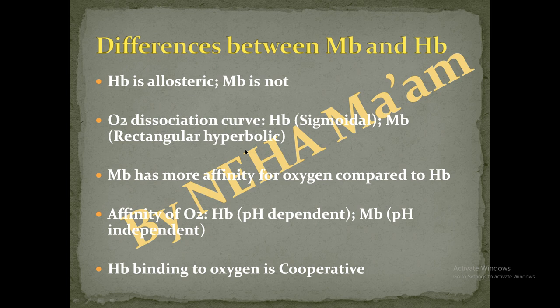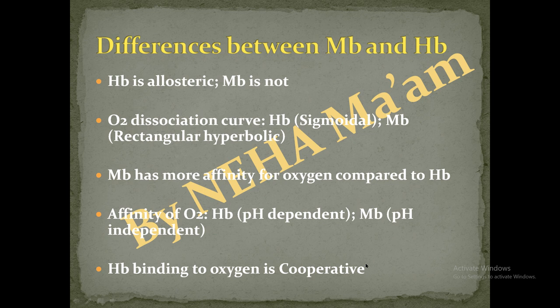Myoglobin binds oxygen with more affinity than hemoglobin. The binding affinity of hemoglobin to oxygen is pH-dependent, while myoglobin is pH-independent — meaning there is no pH requirement for oxygen to bind to myoglobin. Hemoglobin binding is cooperative: when one oxygen molecule binds, it facilitates binding of more oxygen molecules. This cooperative nature is not seen in myoglobin.